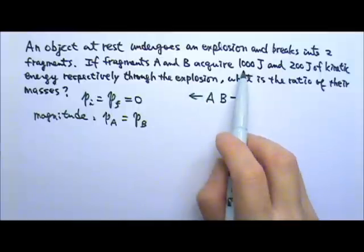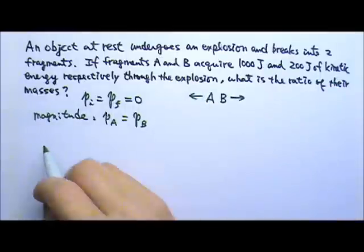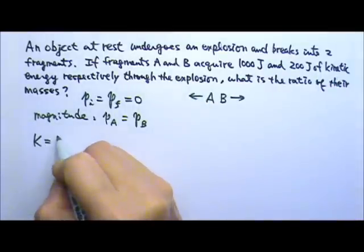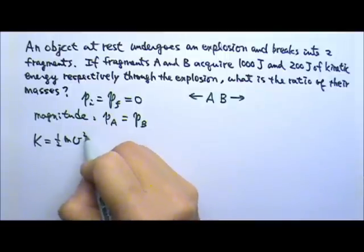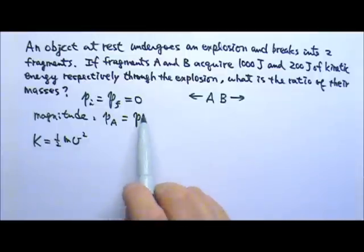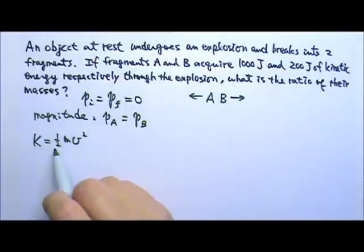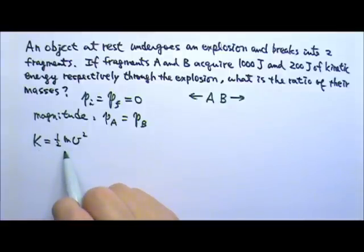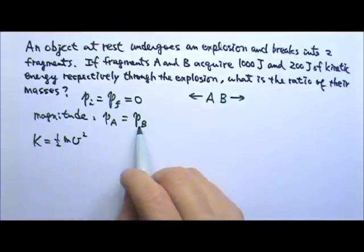The problem gives us information about their kinetic energy. Kinetic energy is K = ½mv². Since A and B have the same amount of momentum, it's convenient to rewrite kinetic energy in terms of momentum.